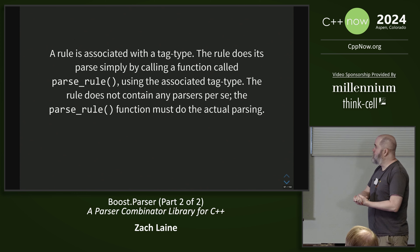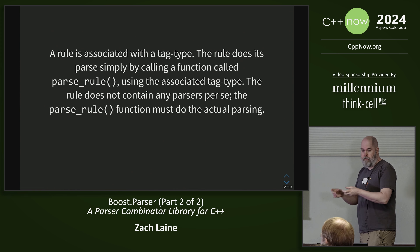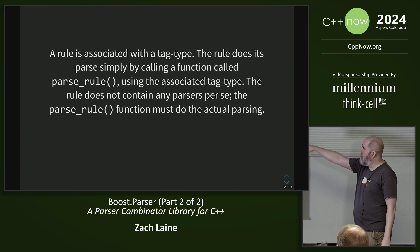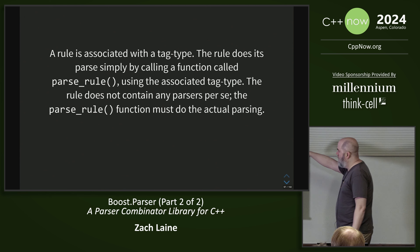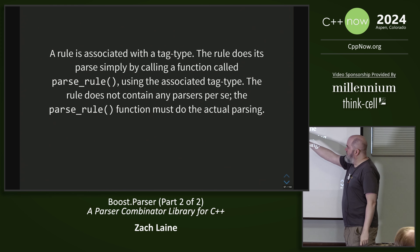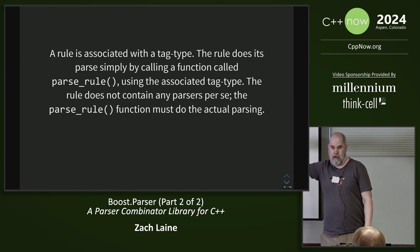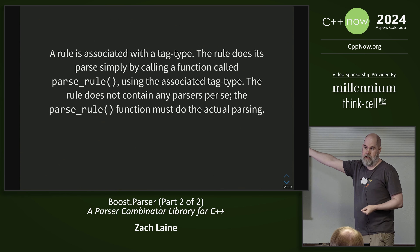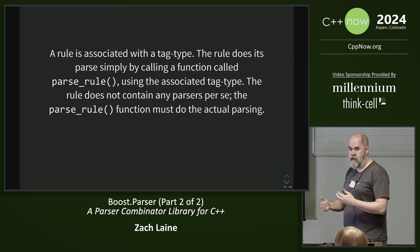The way a rule works is like this: you have a tag type associated with the rule, and that is part of the type of the rule. All it does to do parsing is call a function called parse_rule, giving it the tag type as the first parameter — it's actually a pointer to the tag type. Someone better have implemented that parse_rule, and that's how it does its real work. That's essentially like a forward declaration of some work to be done later, just like you forward declare a function. This lets us have rules that refer to each other in a way that breaks cycles.